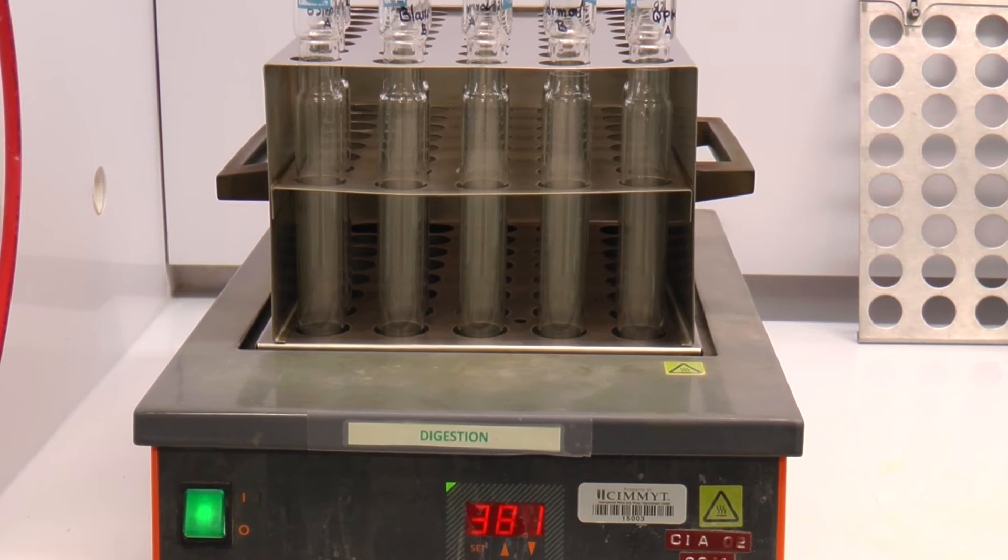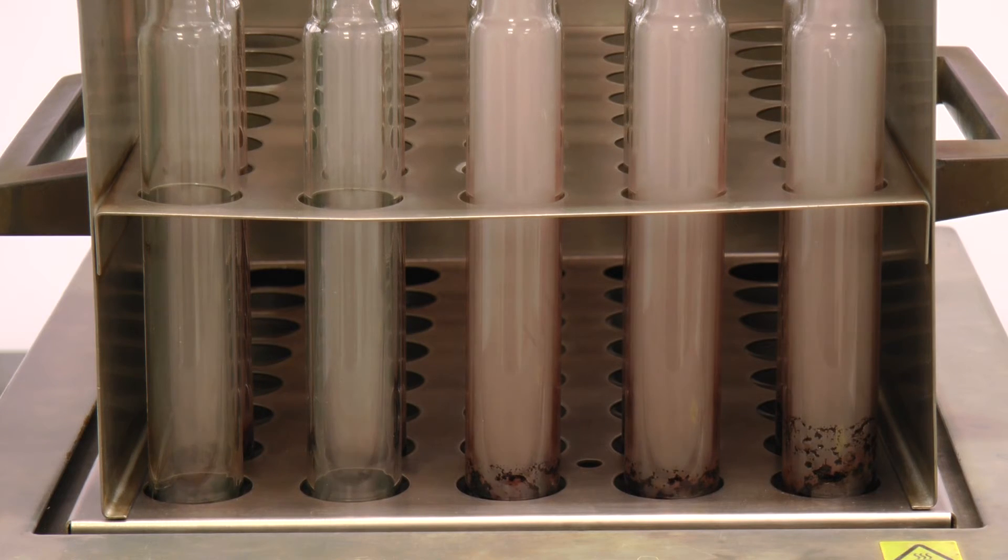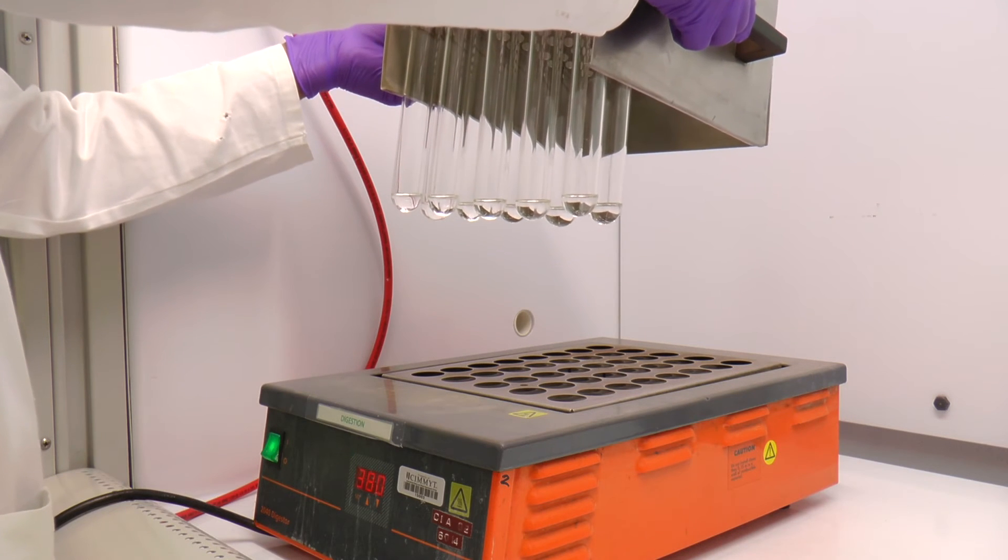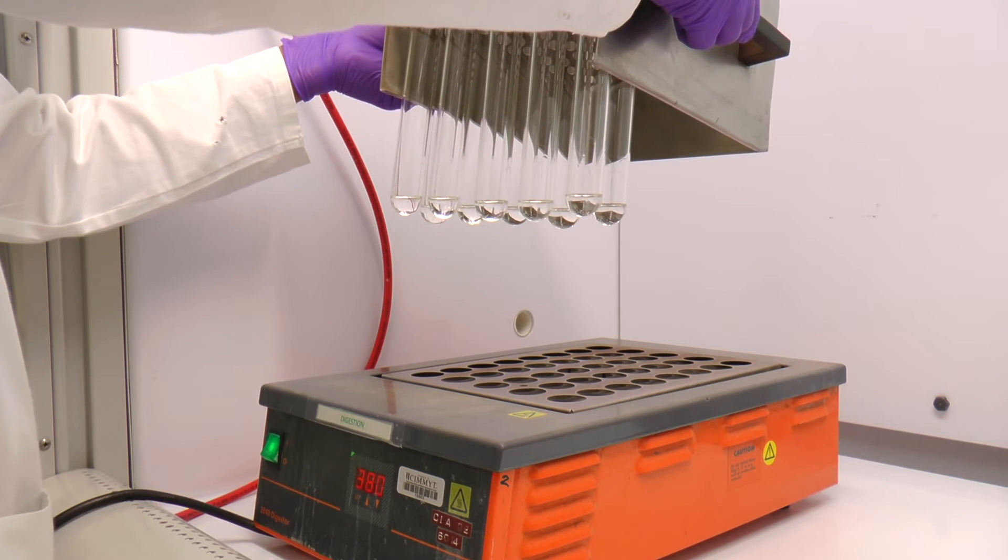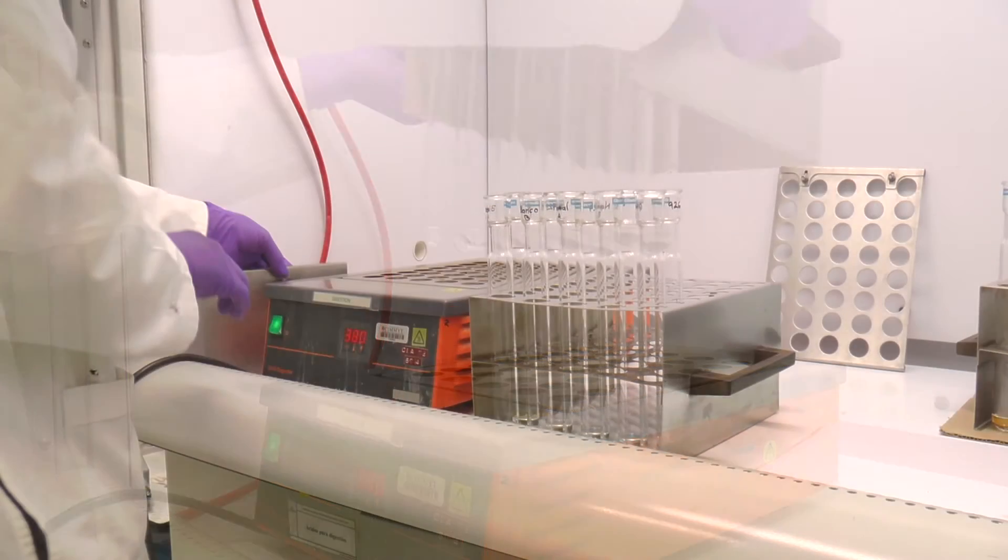Place the tubes in the digester, preheated to 380°C and digest the samples for 90 minutes. At the end of the digestion process, remove the tubes and put them under the extraction hood for 15 minutes.